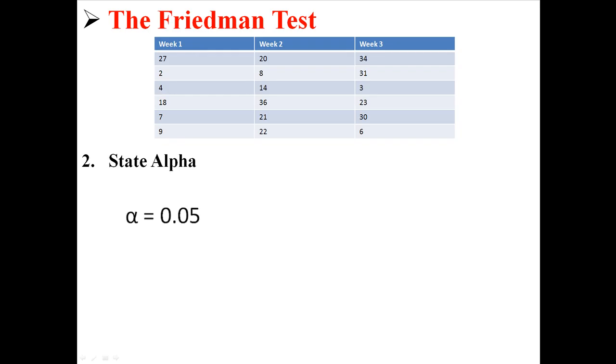Our alpha, like I said, is just going to be alpha equals .05. For our degrees of freedom we're going to use degrees of freedom equals k minus 1. k is the number of groups we're comparing. Here we have 3 groups, so 3 minus 1 is 2. Our analysis will use 2 degrees of freedom.